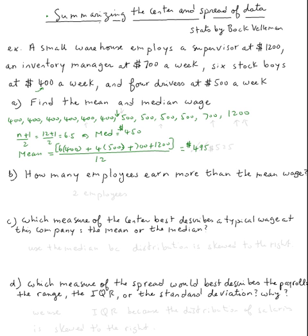Actually I made a mistake. If you add those and divide it, you're not going to get this, you're going to get $525. You can use your calculator to get all these numbers. Now it says how many employees earn more than the mean wage, more than $525? It's only two, $700 and $1200. So two employees.